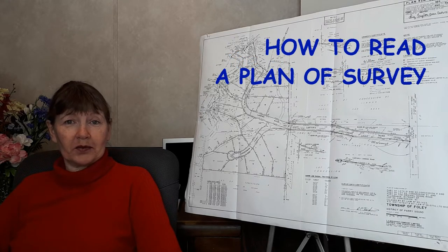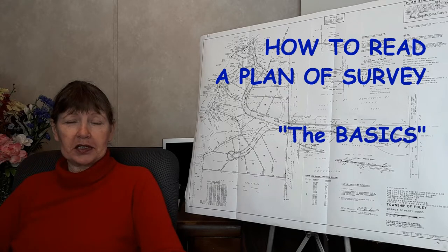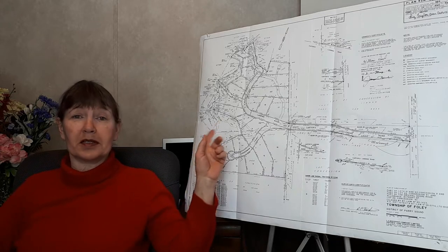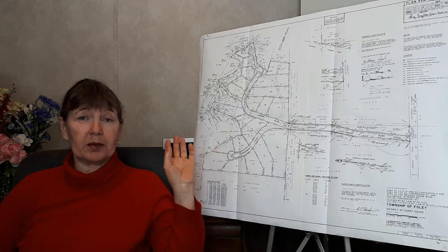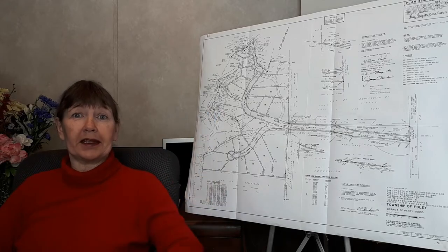Today I'm going to touch on the basics of reading a plan of survey. There are six elements on a plan of survey that you need to know to be able to read it and decipher it. Whether you're looking at a plan that's a basic outline of one piece of property or whether it's a complex plan such as this one here. My goal today is to help you learn the basics of reading a plan of survey so that you can find the information that you need when you're looking for a property.